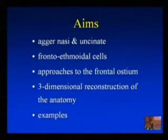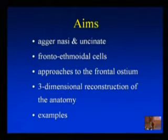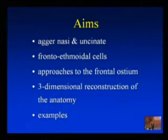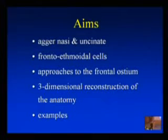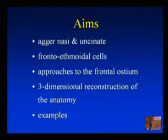In this lecture, I'm going to concentrate on the relationship of the agonese cell and the uncinate process, and look at how those two sit together. We're going to look at all the frontal ethmoidal cells and the different configurations that can occur in the frontal recess, going through each one sequentially and identifying them in increasing complexity. We'll also look at various approaches using the frontal ostium to address these configurations.